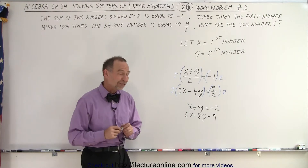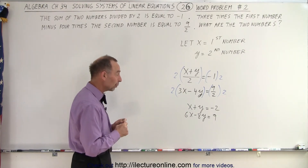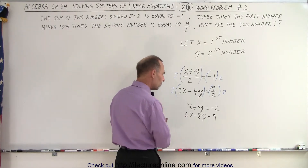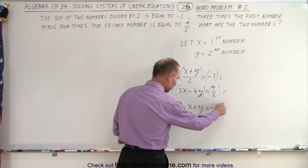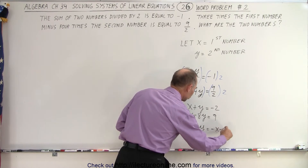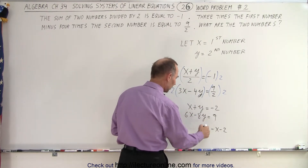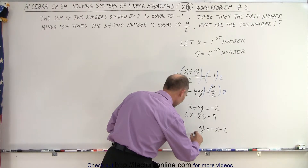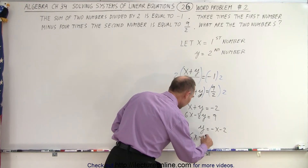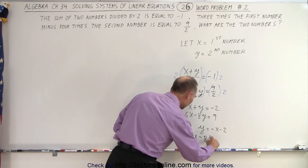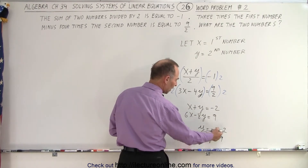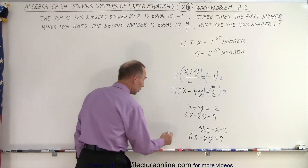Now, having those equations in simplified format, we could use the method of substitution. If we move the x to the other side, we get y is equal to negative x minus 2. That's the first equation, simply moving x to the right side. The second equation remains 6x minus 8y is equal to 9. Now all we have to do is substitute the value for y, which is negative x minus 2, into the second equation.